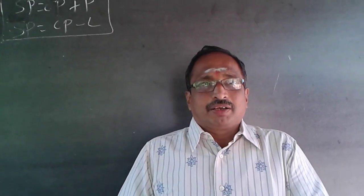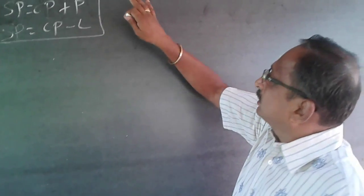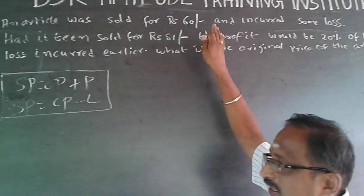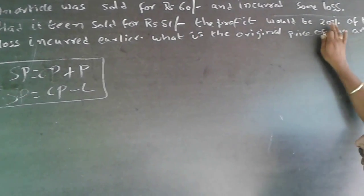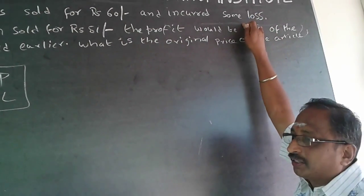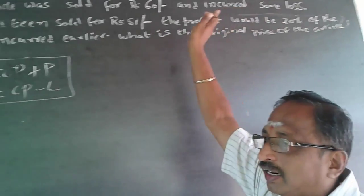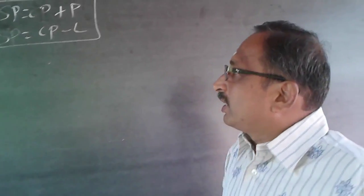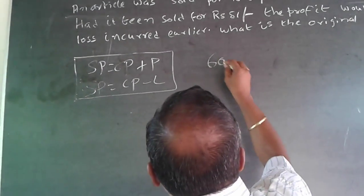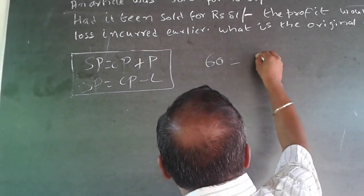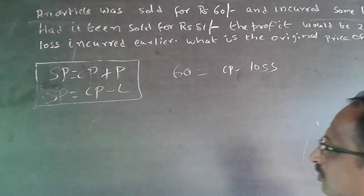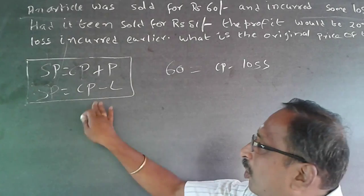Here the profit is 20% of the loss incurred — it is being compared to a third element, not to cost. When sold for Rs 60 with a loss, the equation is: 60 = CP minus loss.